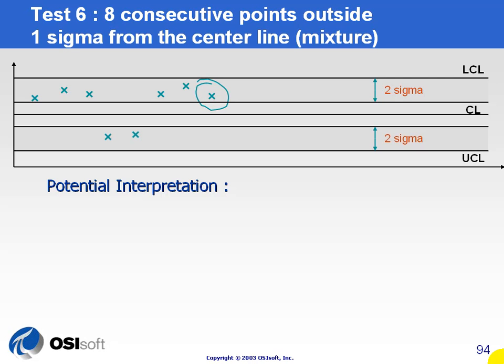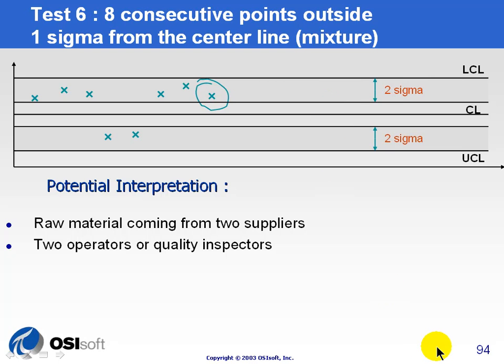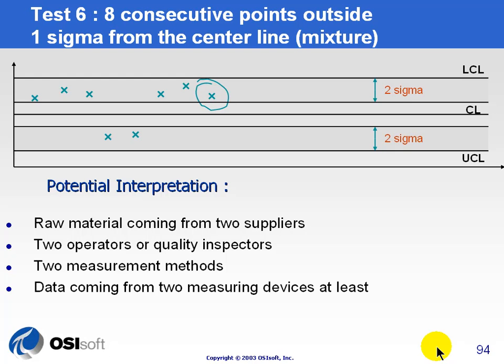Test six is when you have eight consecutive points outside one sigma. The potential interpretation here is you've got raw material coming from two different sources, and neither source is within the range you would expect to see your data come in. As you can see, one source is producing results up here, the other source down here. Another interpretation is if you've got two different people either running or taking samples and doing the process a little differently, resulting in two different procedures producing two different resulting sets of data — which doesn't necessarily mean the process is changing, it's just the way people are running or measuring the process. Two measurement methods, or data coming from two different measuring devices.